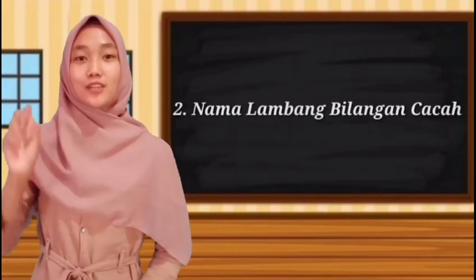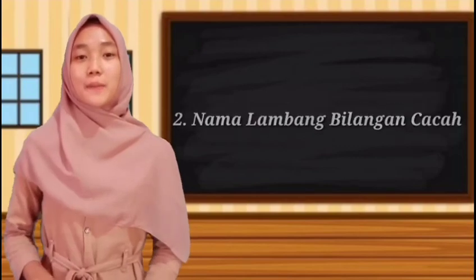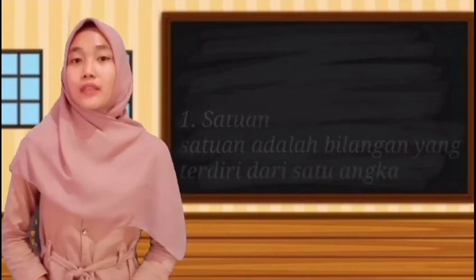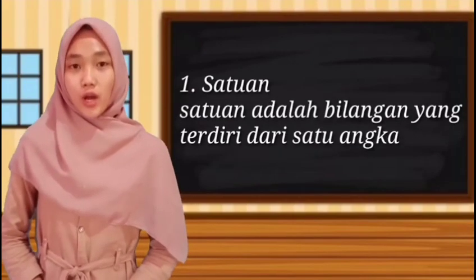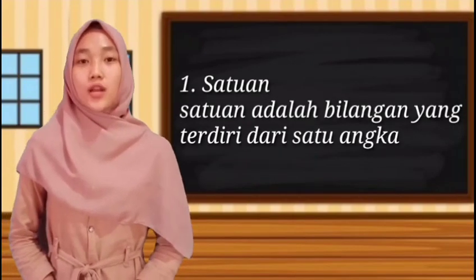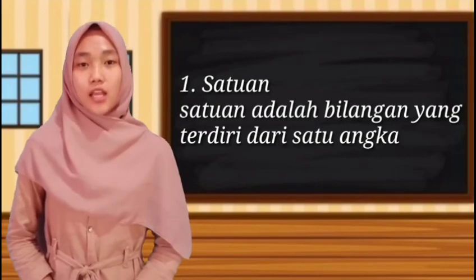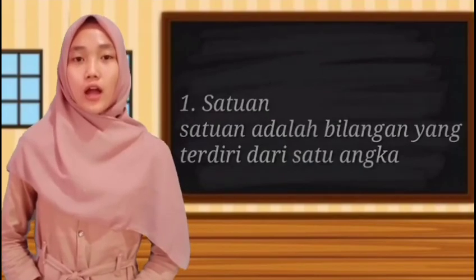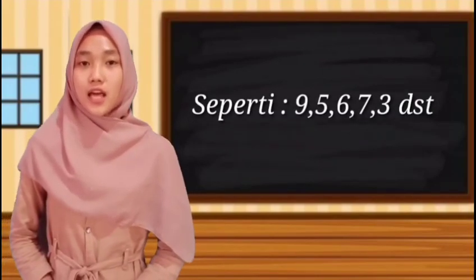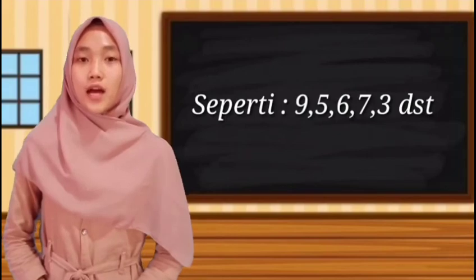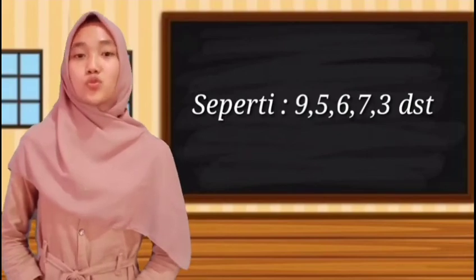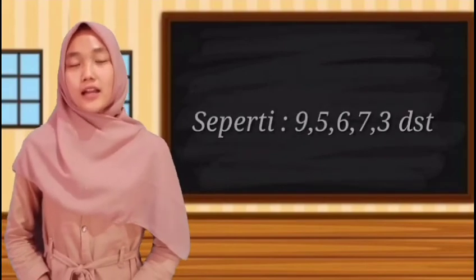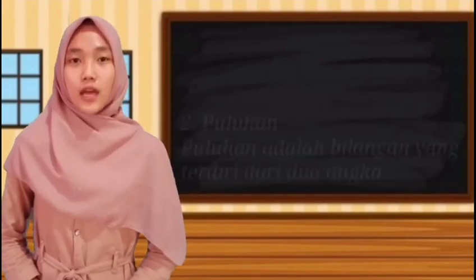Pembahasan yang kedua yaitu nama lambang bilangan cacah. Yang pertama satuan. Satuan adalah bilangan yang terdiri dari satu angka, seperti 9, 5, 6, 7, 3, dan seterusnya.